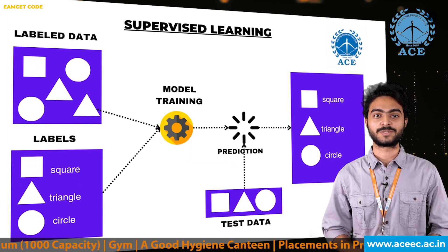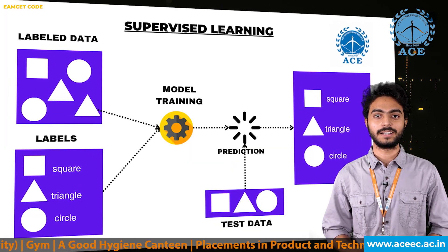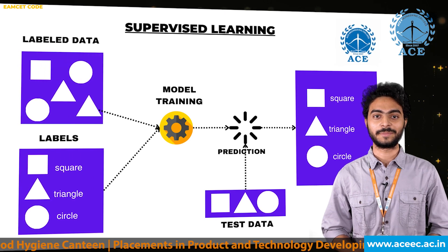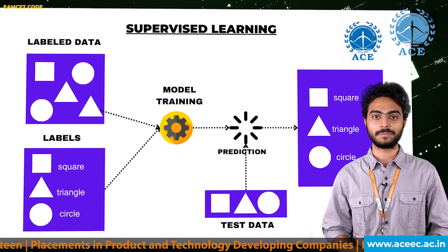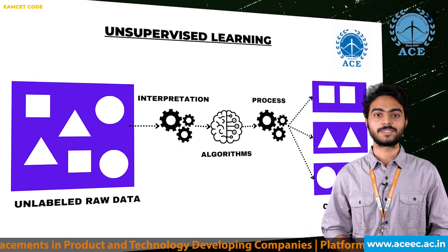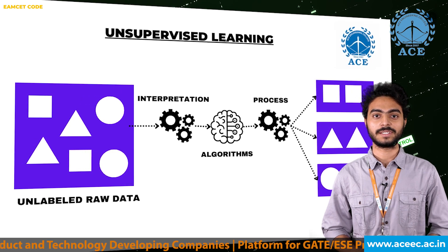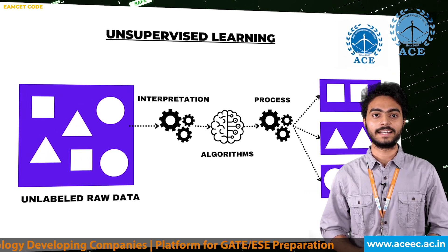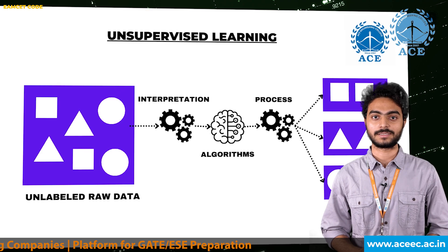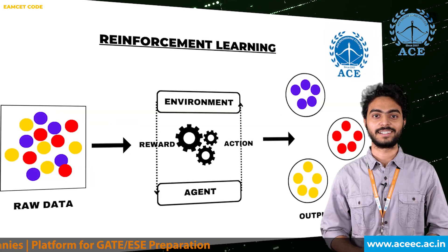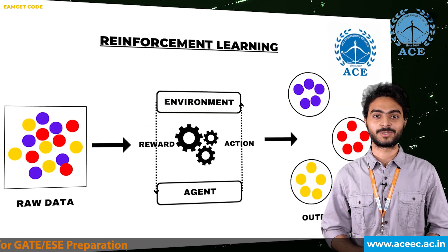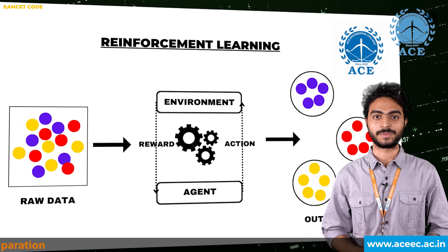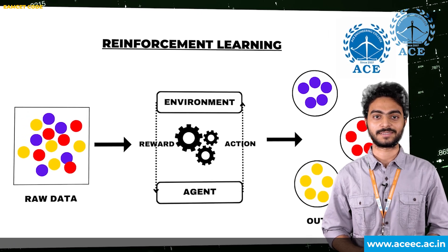Supervised learning is when the algorithm is given labeled data to learn from, such as images with labels of what is in the picture. Unsupervised learning is when the algorithm is given unlabeled data and it creates its own structure and patterns. Reinforcement learning learns through a system of rewards and punishments based on its own actions.